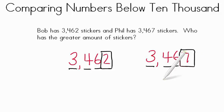Well that's right, 7 is a greater number. So when comparing 3,462 to 3,467, 3,462 is less than 3,467. So who has the greater amount of stickers? Phil has the greater amount because he has 3,467. And 3,467 is a greater number than 3,462.